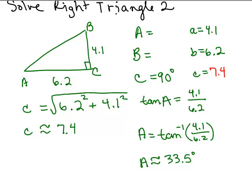So for A up here, I have 33.5 degrees. All right, now I know that A and B have to add up to 90 degrees, so I just do 90 minus 33.5, and now I'm going to get B is 56.5.